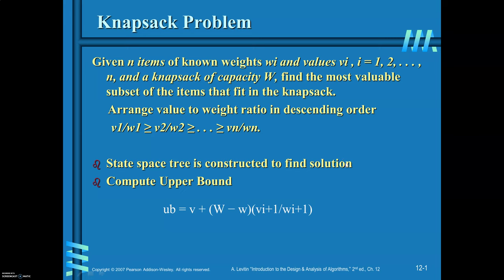Since this is an optimization problem where you are required to maximize the value, you are required to find out the upper bound. The upper bound formula is: UB = V + (W - w_current) × (V_{i+1} / W_{i+1}). I will explain this with the problem.